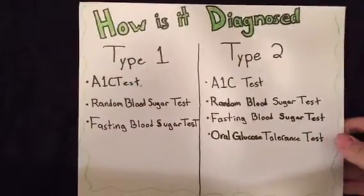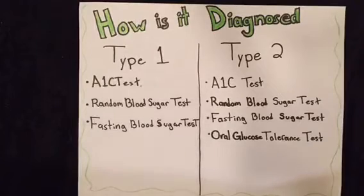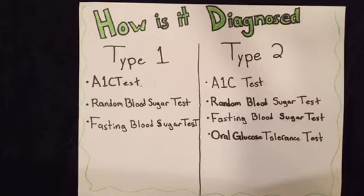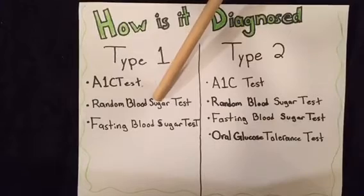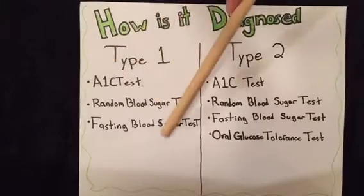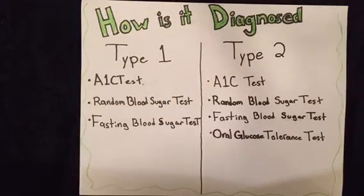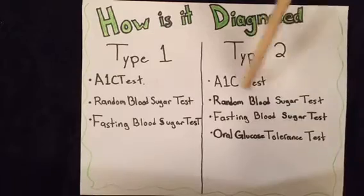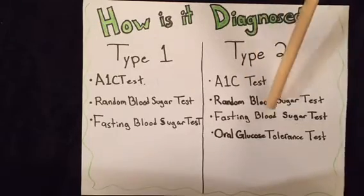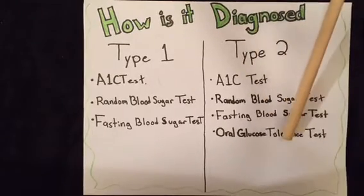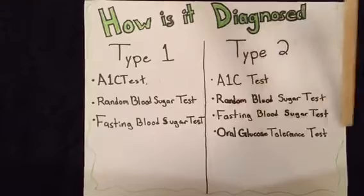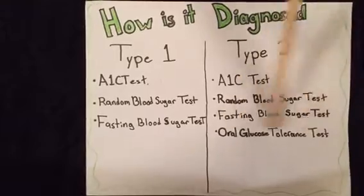How is diabetes diagnosed? If a person is experiencing any of these symptoms, you can go to your family doctor to undergo certain tests to find out if you have the disease. Some of these tests for type 1 are the A1c test, a random blood sugar test, or a fasting blood sugar test. For type 2, you can also take an A1c test, a random blood sugar test, and the fasting blood test, plus an oral glucose tolerance test.